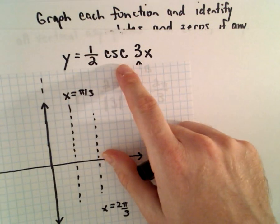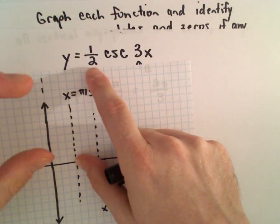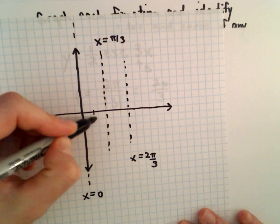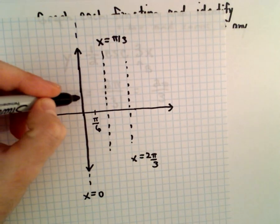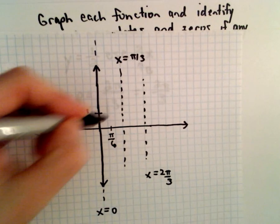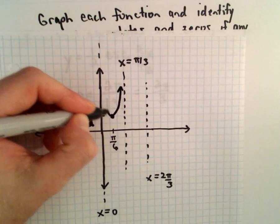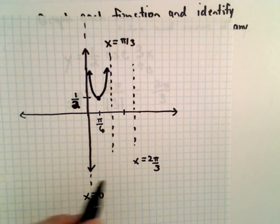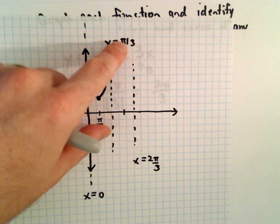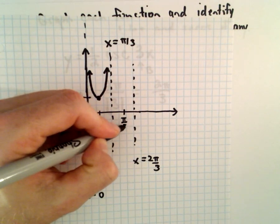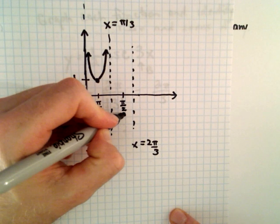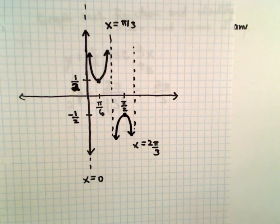It's going to look like cosecant of x, except it's not going to be stretched as much since we're multiplying by one-half. So if this is x equals pi over 3, one-half of that is pi over 6, and that's where cosecant is going to hit the value of one-half. Then it's going to increase and increase. Likewise, the point right in the middle between pi over 3 and 2 pi over 3 — that's pi over 2 — and at pi over 2 you're going to be sitting at negative one-half. Then the function decreases as it approaches either of those asymptotes.